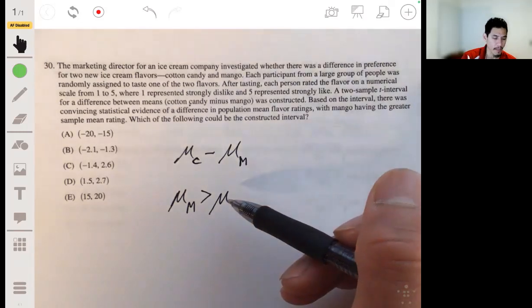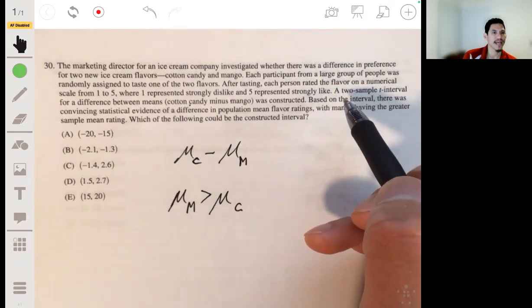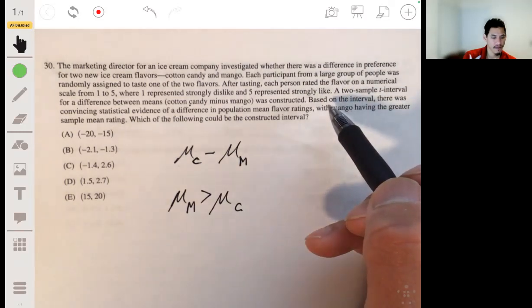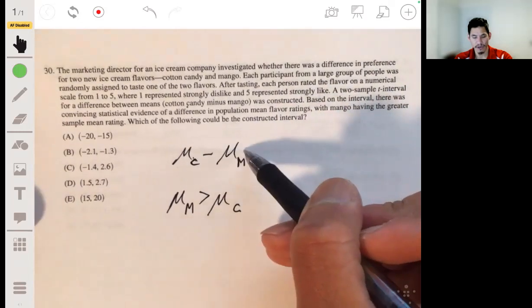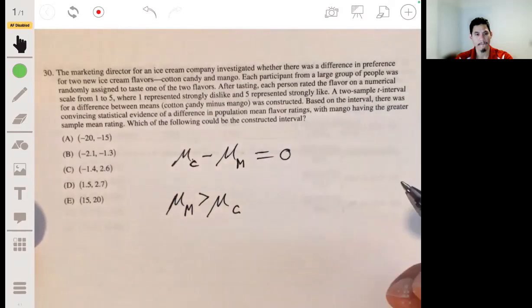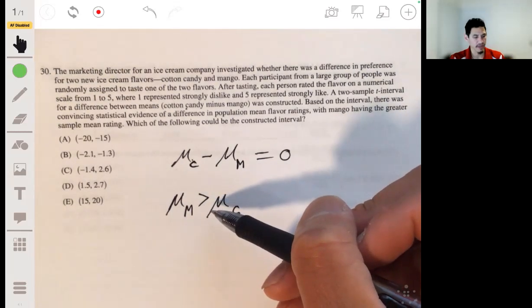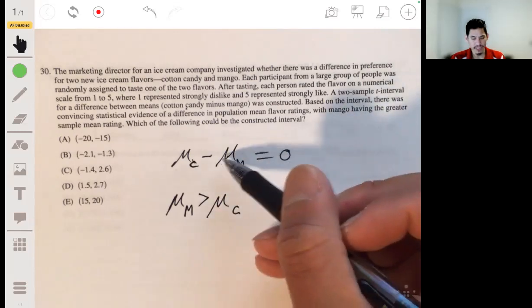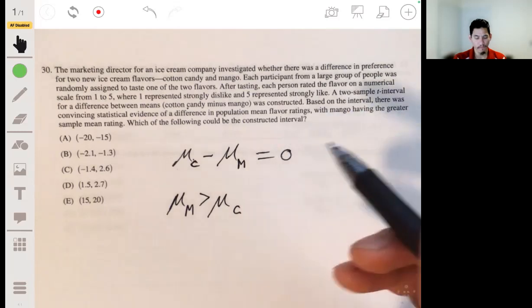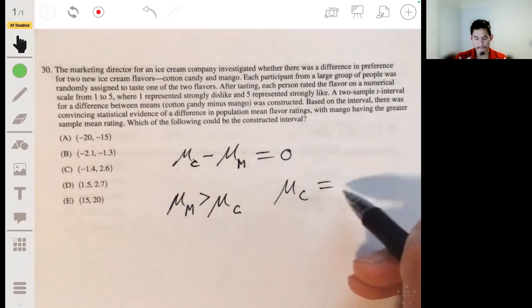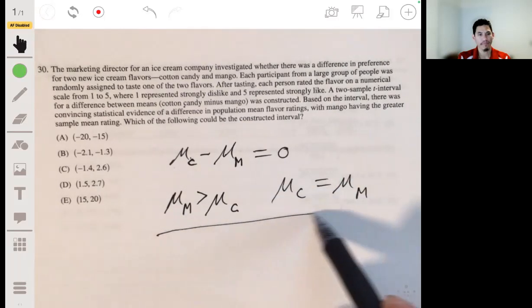If we're looking at an inference test, what the null hypothesis or there being no difference is saying that these two are equal to each other. So their difference would be equal to zero. But if we're trying to find the confidence interval where we have that the mean of mango was greater than the mean of cotton candy, then let's just adjust this by bringing the mean of mango onto the other side.